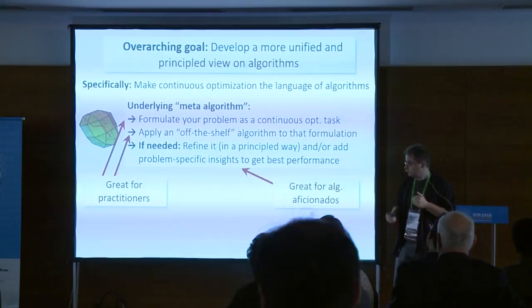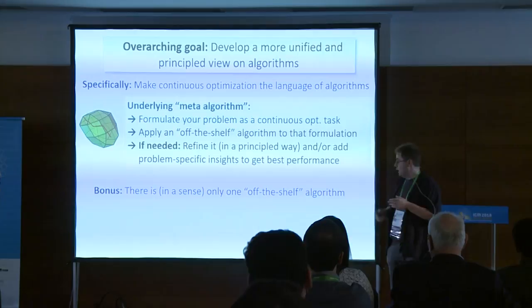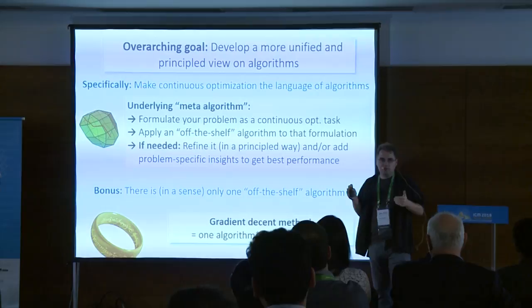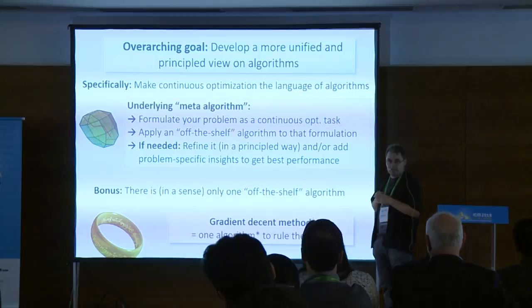This meta-algorithm is quite automatic. And the bonus is that there really is just one algorithm that matters: everything in continuous optimization you solve using gradient descent. There are different forms of gradient descent, but the principle is always the same. This great unifying effect should improve our understanding and give a uniform view of the field.